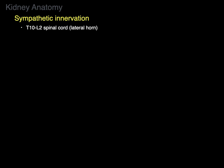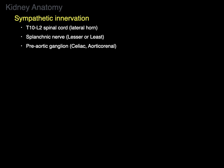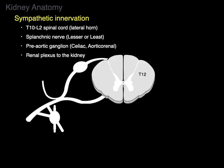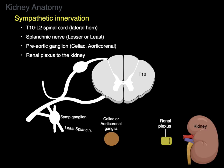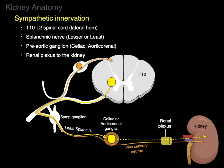Sympathetic innervation starts in the T10 to L2 spinal cord levels in the lateral horn. The axons exit via a splanchnic nerve — such as the lesser or least splanchnic — and synapse in a pre-aortic ganglion like the celiac or aorticorenal ganglion. The renal plexus then takes those sympathetics to the kidney. A pre-ganglionic sympathetic neuron travels through the sympathetic chain without synapsing, reaches a pre-aortic ganglion, and then a post-ganglionic sympathetic neuron travels through the renal plexus to the kidney. Visceral sensory neurons run in the opposite direction back to the spinal cord.